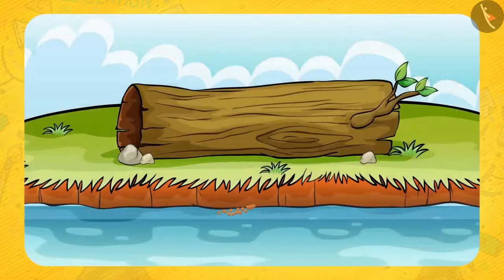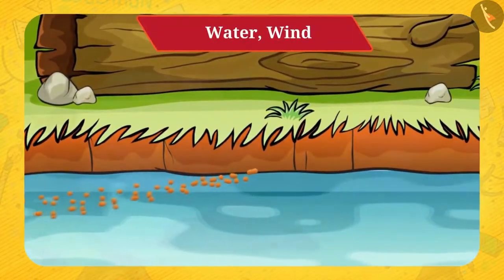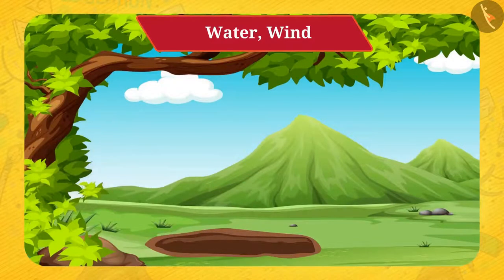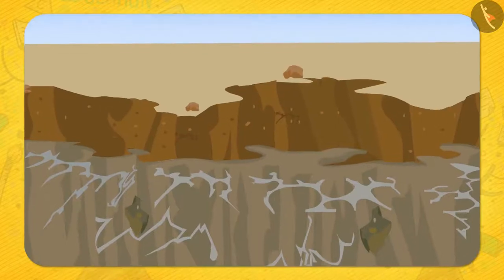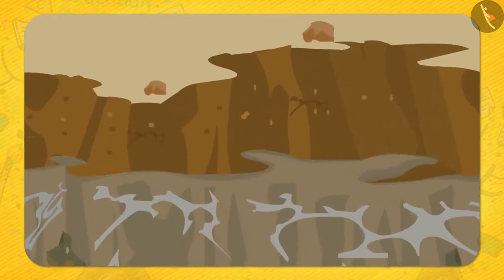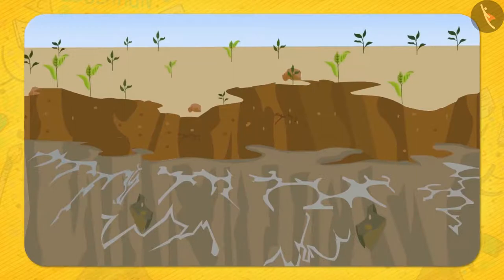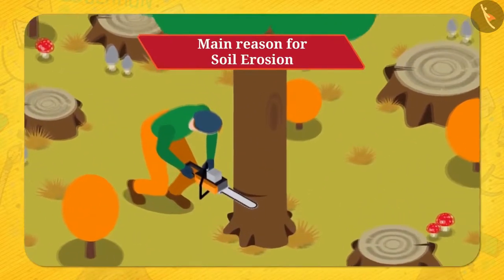Flowing water or wind can take away the small soil particles and deposit them somewhere else. But what if the soil gets blown away? The rocky layer below the soil will be exposed and we will lose a valuable resource, because very few plants grow in the rocky layer. This is nothing but soil erosion.